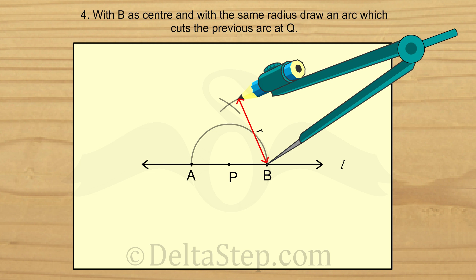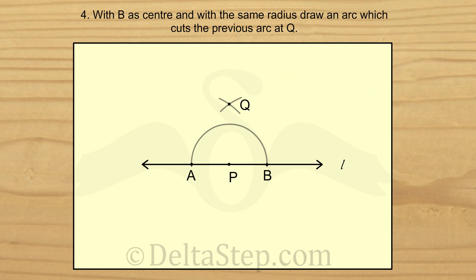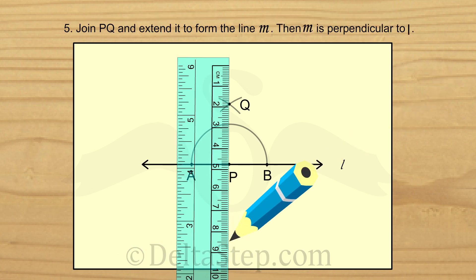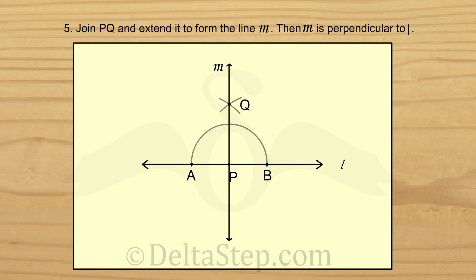Normally, we would draw arcs on both sides of the line segment AB but since we already know one point on the perpendicular bisector which is P, we don't need to do that now. Join PQ and extend it on either side to form a line which would be perpendicular to line L. We call this line M. So, line M is perpendicular to line L.